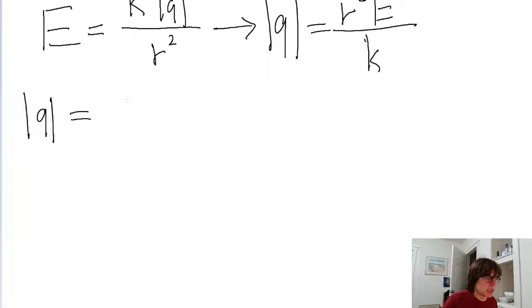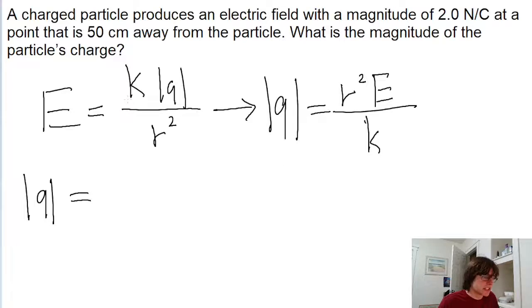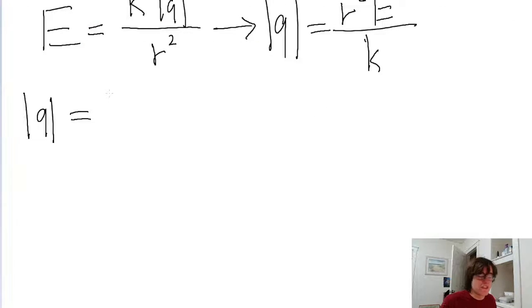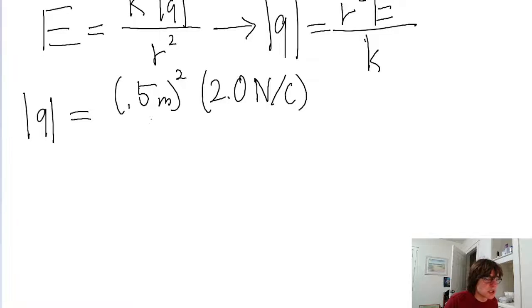The charge is equal to the square of the distance, which is given in the problem as 50 centimeters, so that's the square of 0.5 meters, multiplied by the electric field, which is given in the problem as 2 newtons per coulomb.